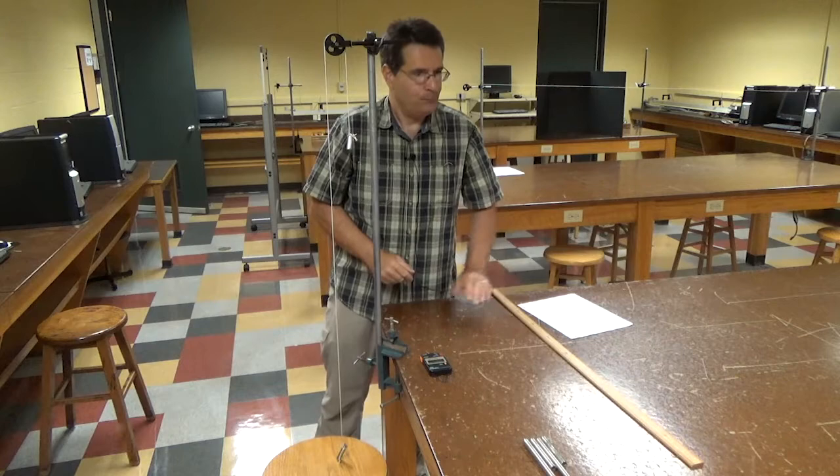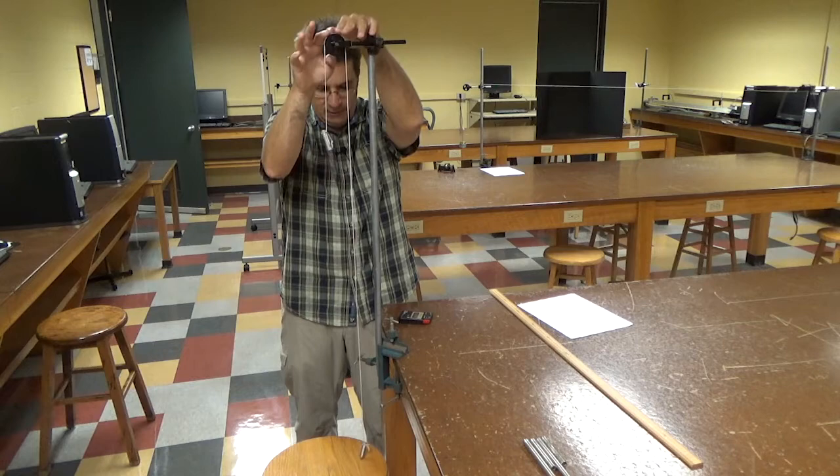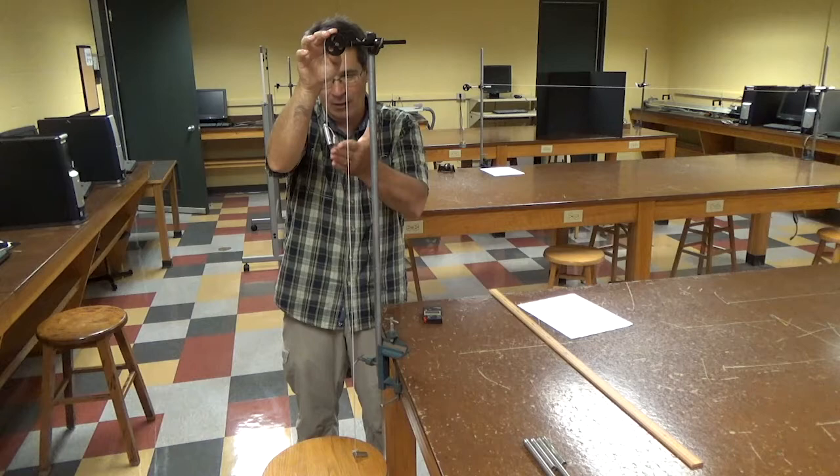But all we would do in lab is, here's a trusty old stopwatch, I would just exchange these two so that the lighter mass starts right on the ground. In this case, it's the stool, so that means I have, again, 100, well, if I was doing it with the floor, 100 centimeters of height difference.